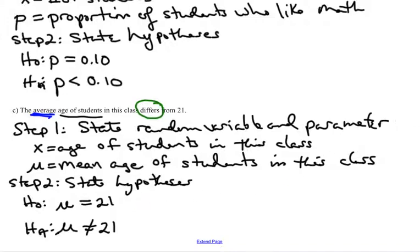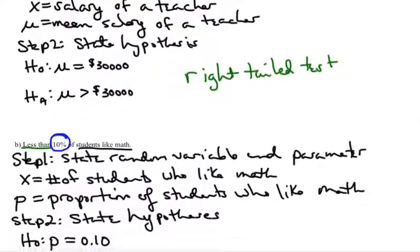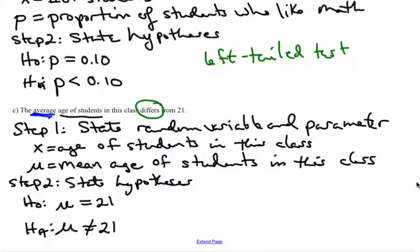As a side note, because this one is greater than, we call this a right-tailed test or one-tailed test. Because this one is less than, we call it a left-tailed test, or again, one-tailed. And because this one is not equal to, it's called a two-tailed test. And there you have it.